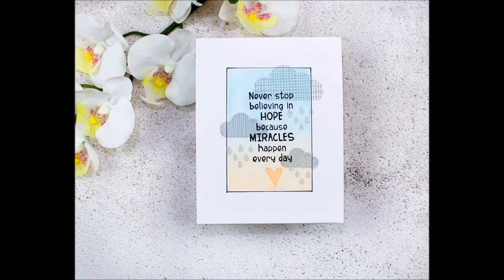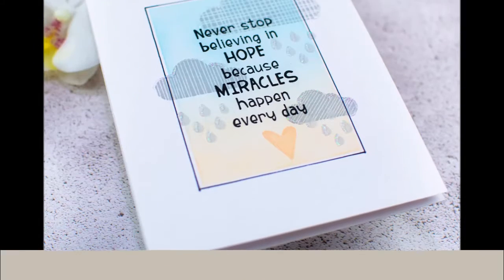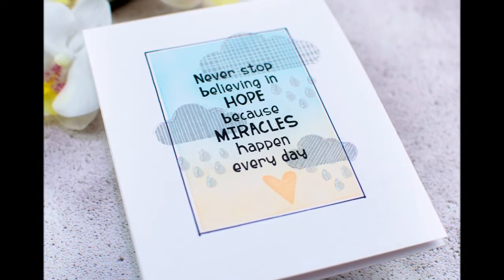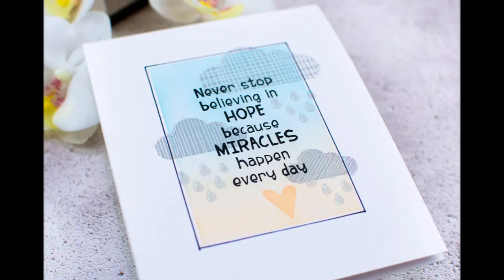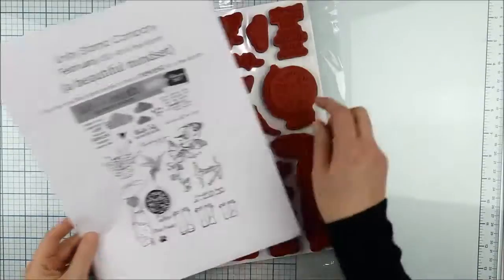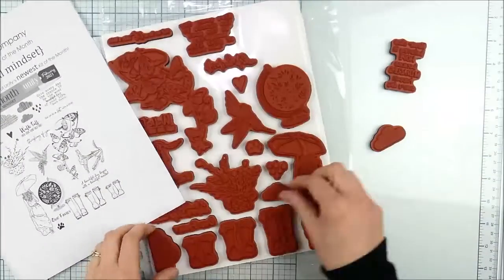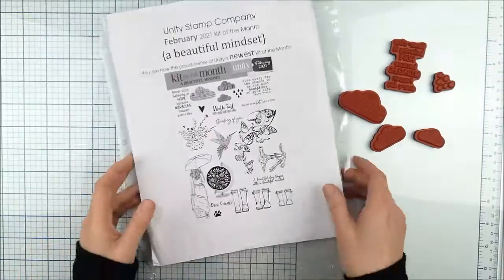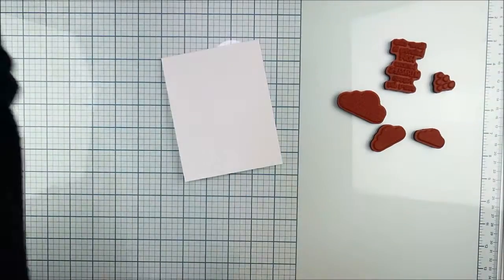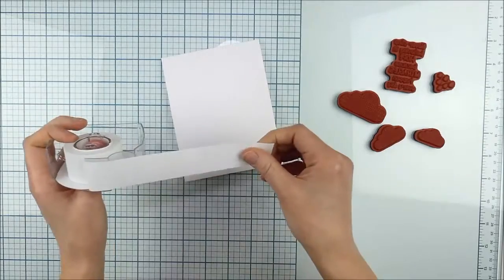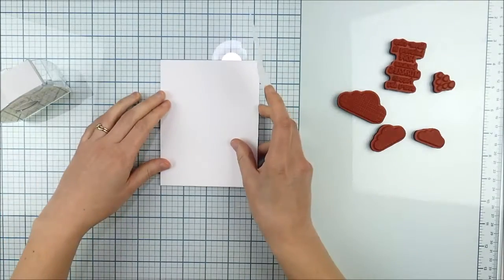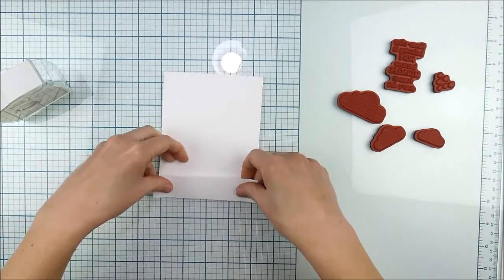Hello, this is Heather Hoffman and I'm here today with a one layer clean simple card using the February 2021 kit of the month. This is just some fun ink blending and some of the fun images and a sentiment from this kit. I love all those little clouds and that little raindrop stamp and some of the sentiments were super encouraging, and I just thought it would be fun to make a card that kind of utilized those.